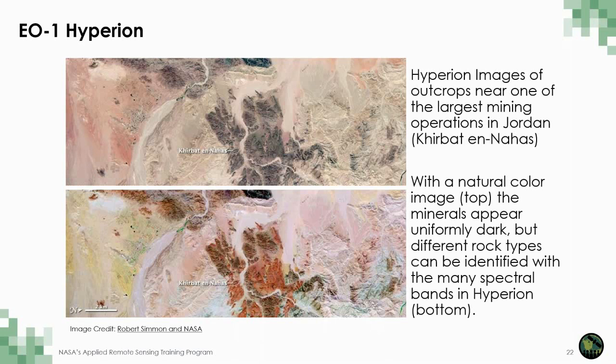One use of Hyperion is for mapping mineral deposits. The hundreds of bands in the hyperspectral imagery enable researchers to differentiate minerals and rocks that appear similar in visible light. These images are of outcrops at a mining site in Jordan, where the minerals are uniformly dark in the natural color image on top but are distinguishable in the false color image on the bottom. Here you can identify different rock types for mining activities or for geologic mapping in general.